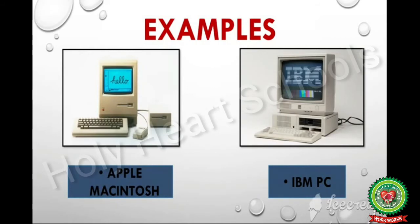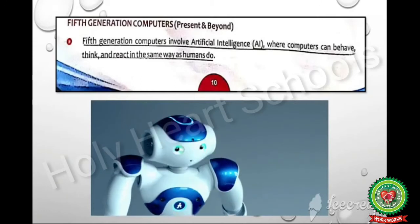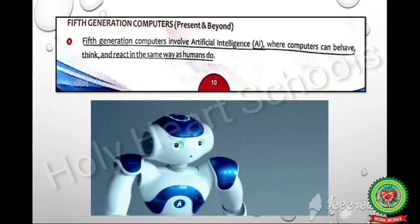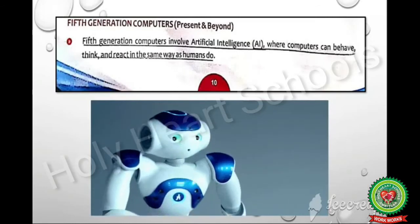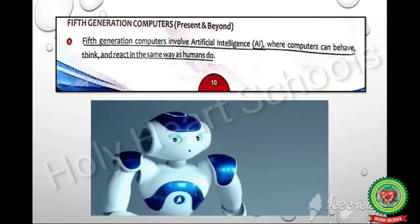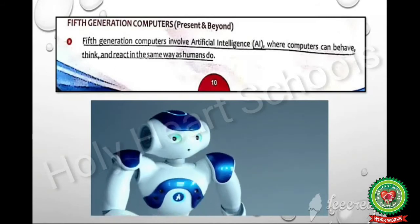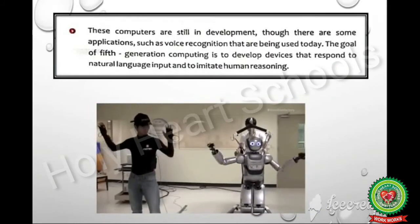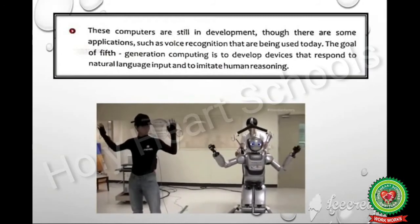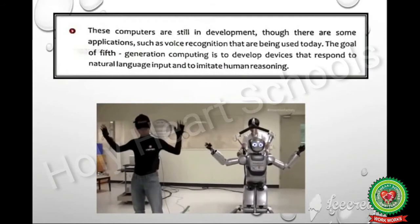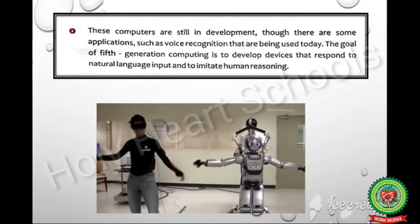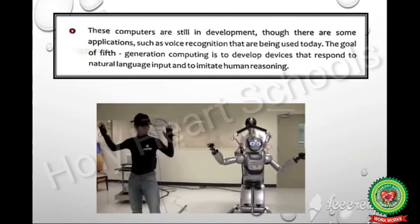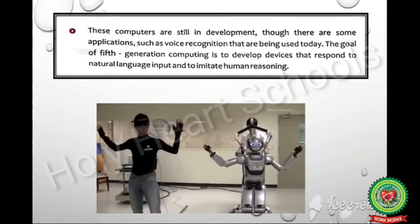The last is fifth generation computers, present and beyond. These computers involve artificial intelligence, where computers can behave, think, and react in the same way as humans do. The goal of fifth generation computing is to develop devices that respond to natural language input and to imitate human reasoning. An example is robots.